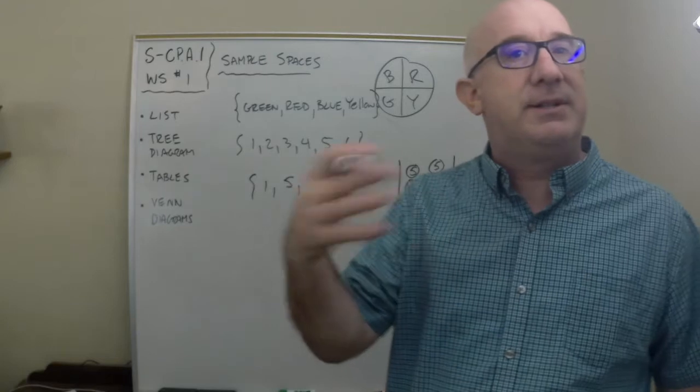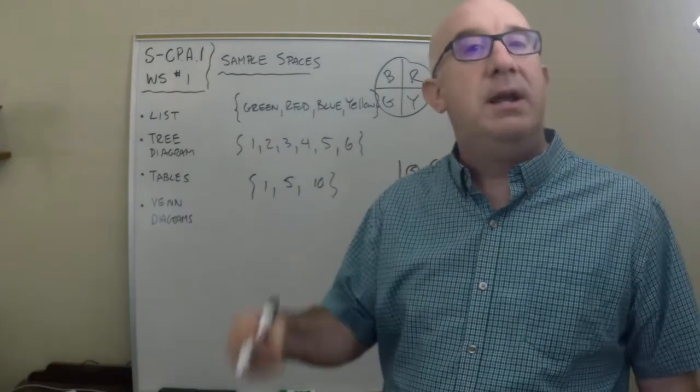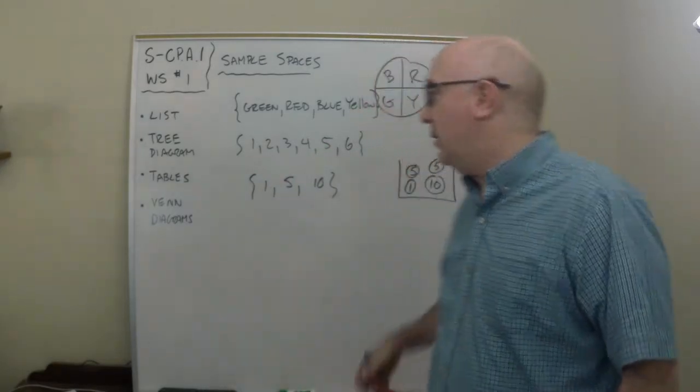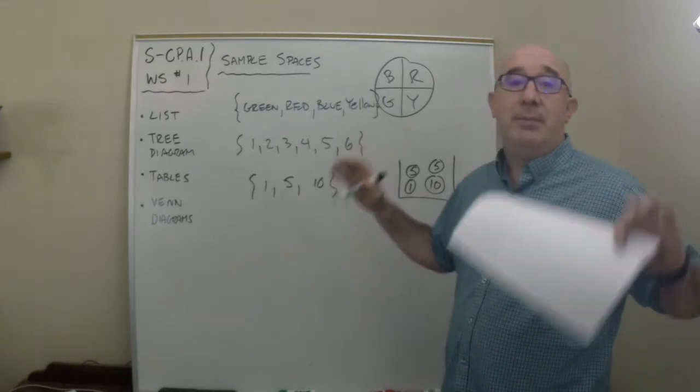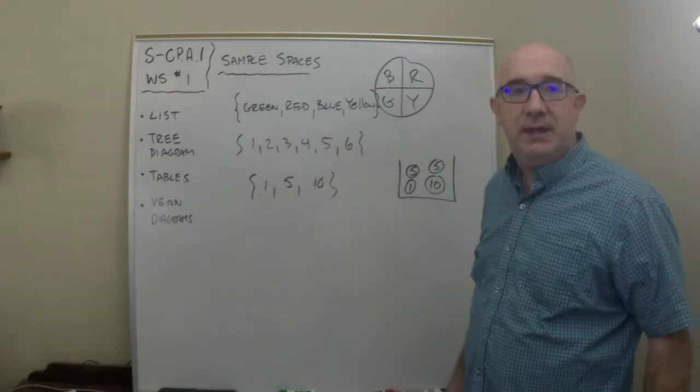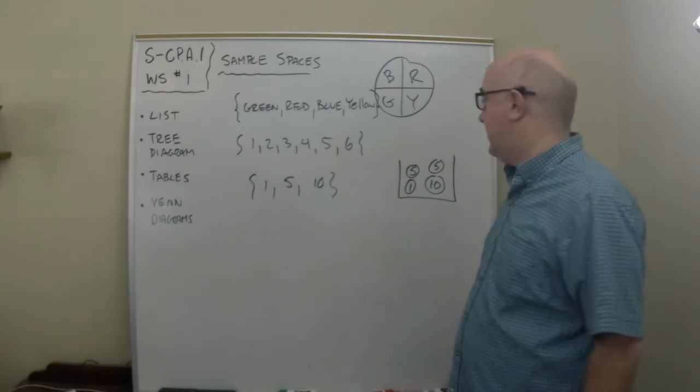Now notice I didn't list the 5 twice. When we're listing, we never list it more than once. It's there. It's an outcome. It will factor into the probability, but in the sample space there's only three things there to connect up.